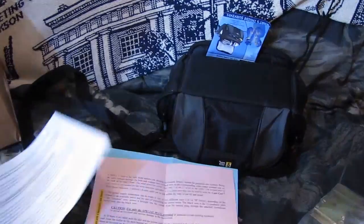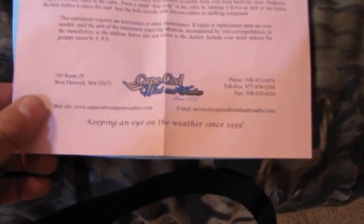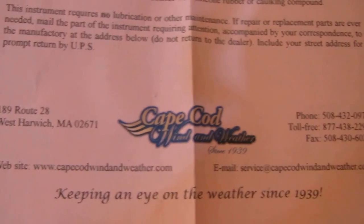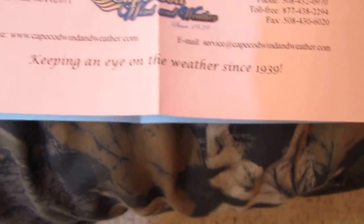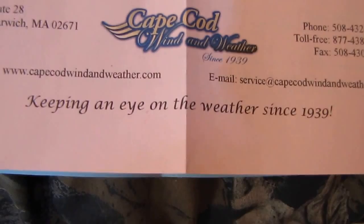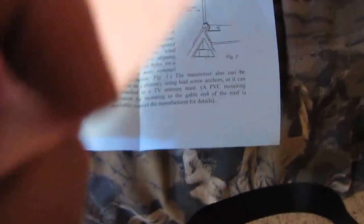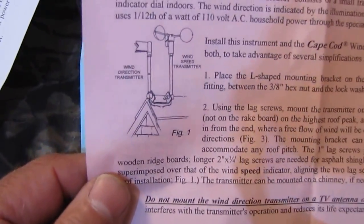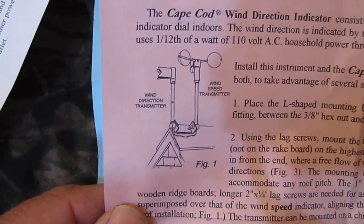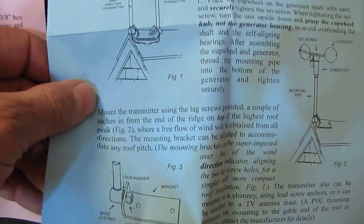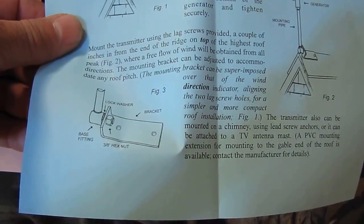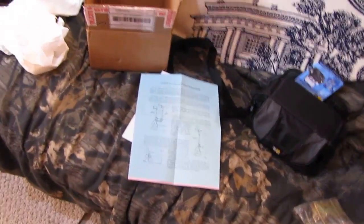This is part two of my video. And here's our instructions. It came in a box right here. All my cable. Instructions. Cape Cod wind and weather. Keeping an eye on the weather since 1939. Yeah, so it's great instructions. I had them out to indicate the wind speed and the wind indicator. And all that good stuff. So yeah. And here's the wind speed indicator. But yeah, it's pretty awesome. Well anyway, y'all. I just wanted to share that with you. And I'll do another video on it when we get some wind.